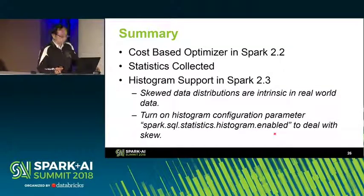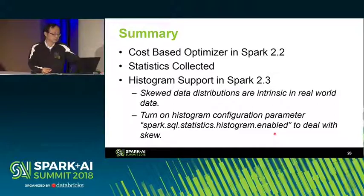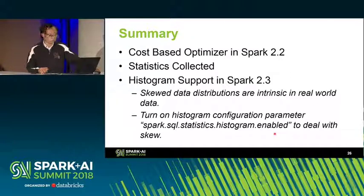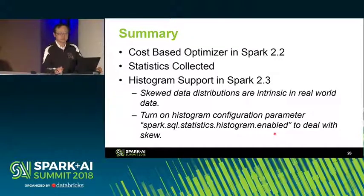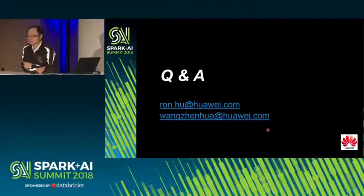Let me give a quick summary. In today's talk, we briefly covered the cost-based optimizer in Spark 2.2 and what statistics information we collect. In Spark 2.3, we further enhanced CBO with histogram support. The reason we developed this feature is because skewed data distributions are intrinsic in real-world data — it is always there. I encourage you to turn on the relevant configuration parameters to use this feature.